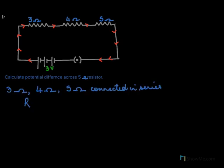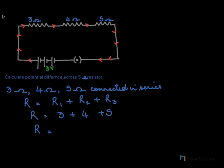If they are connected in series, then the effective resistance R will be R1 plus R2 plus R3. So R equals 3 ohms plus 4 ohms plus 5 ohms, giving a total resistance R of 12 ohms.